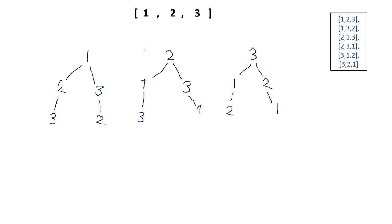From the programming perspective, what we are doing is backtracking. First we start our decision and go with 1. We had choices of 2 and 3, but started with 2, then we had only choice 3. We completed it and collected the result 1 2 3. Now from 3 there are no choices left, so we go back to the 2 junction and check if any other choices are left — in this case there are none, so we go back again. This going back is basically backtracking.